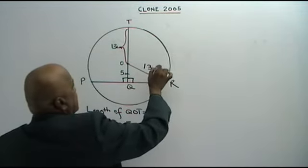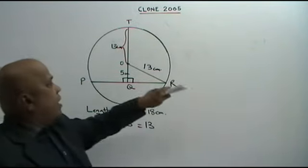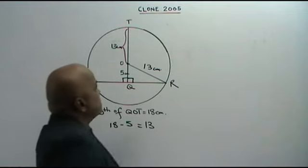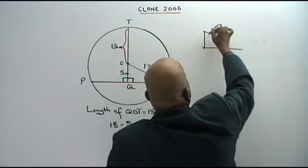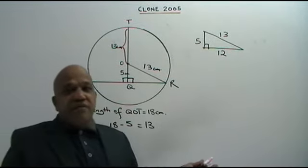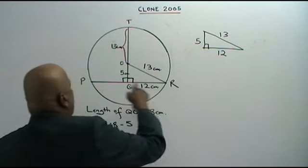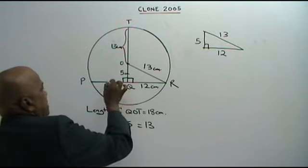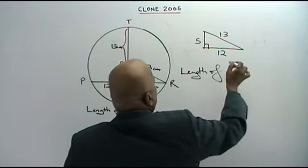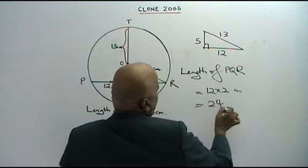You are asked to find the length of PQR. Using the Pythagoras theorem, if OQ is 5 and OR is 13, then QR equals 12 centimeters — this is a 5-12-13 Pythagorean triple. Since PQ is also 12 centimeters by symmetry, the length of PQR equals 12 times 2, which is 24 centimeters.